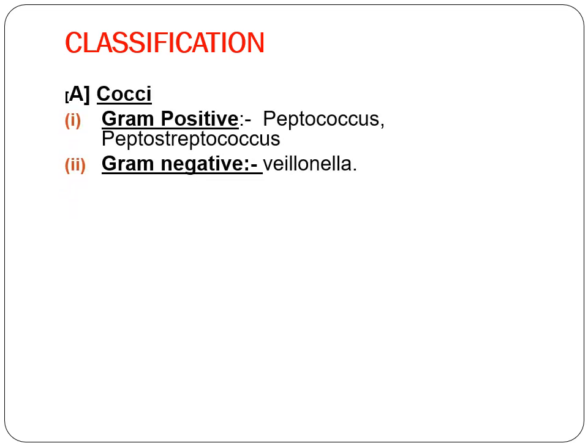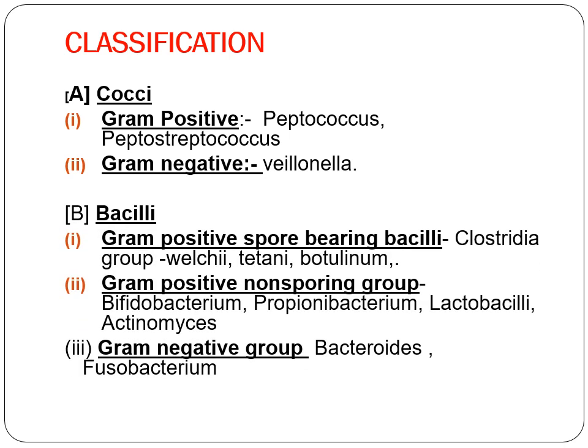How do we classify anaerobic bacteria — a common viva question. They are either cocci or bacilli. Gram-positive cocci include Peptococcus and Peptostreptococcus. Among gram-negative cocci: Veillonella. Among bacilli, the gram-positive spore-bearing group is the Clostridium group — including C. welchii and C. tetani. Gram-positive non-spore-bearing group includes Bifidobacterium and Lactobacilli. The gram-negative group is Bacteroides.